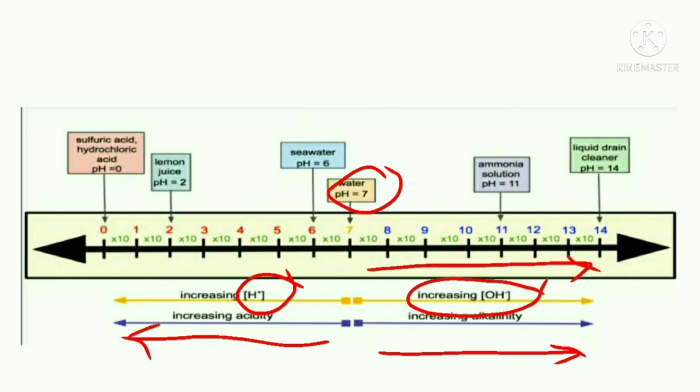When we are going from 7 towards 0, our H plus ions concentration in water or any solution is increasing. If you are going from 7 towards 14, our OH ions concentration is increasing in the solution. That is, alkalinity is increasing.